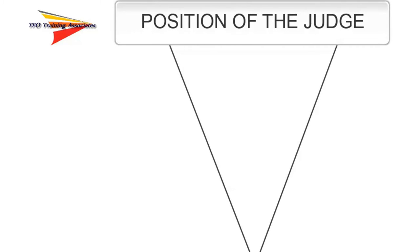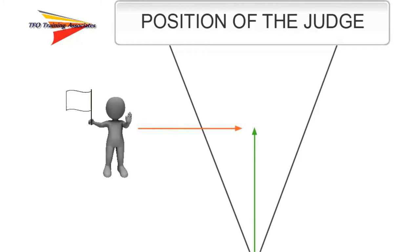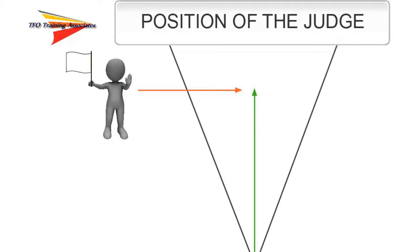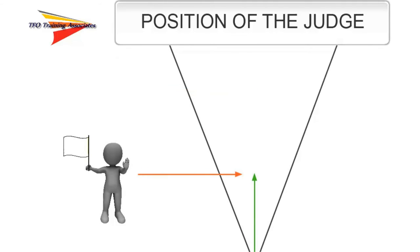There are two important aspects of judging the landing of the javelin. First, the judge of the landing must be located outside the landing sector and must be able to be in position perpendicular to the landing of the implement. This means the judge must be able to move and change position depending on the length of the throw, and must also be able to get low enough to properly judge the landing.